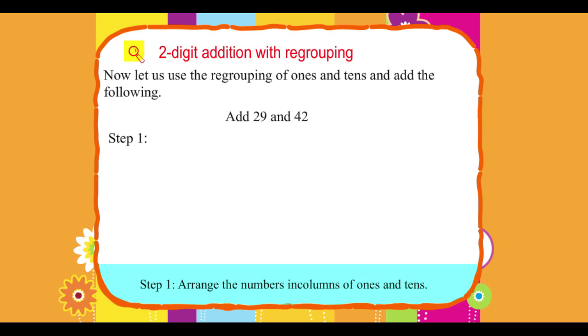Step 1. Arrange the numbers in columns of ones and tens. Ones, tens. 29 plus 42.